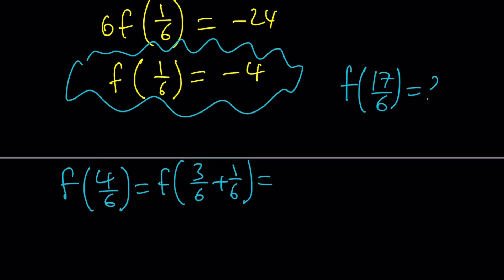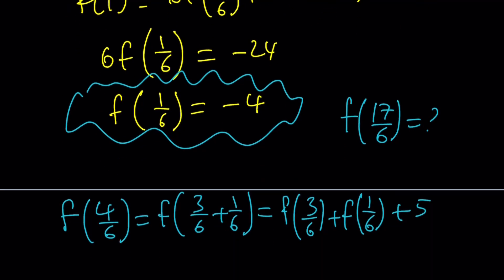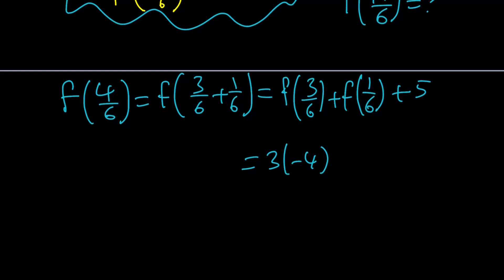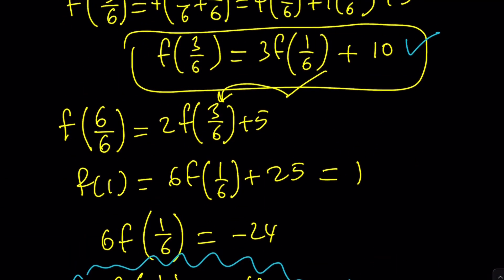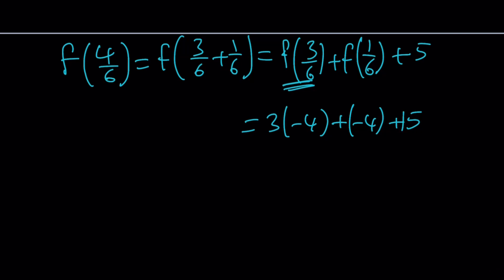f of 4 over 6 equals f of 3 over 6 plus 1 over 6, which by the original formula is f of 3 over 6 plus f of 1 over 6 plus 5. f of 3 over 6 is 3 times f of 1 over 6 plus 10. So we get 3 times negative 4 plus 10, plus negative 4 plus 5 — that's negative 12 plus 10 plus negative 4 plus 5, giving us negative 1. So f of 4 over 6 equals negative 1.